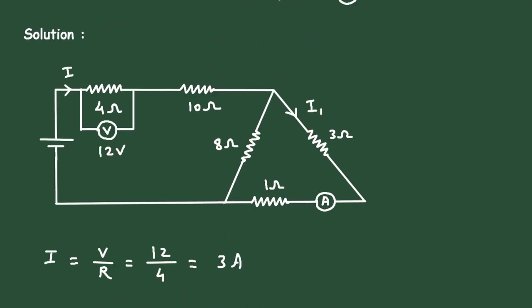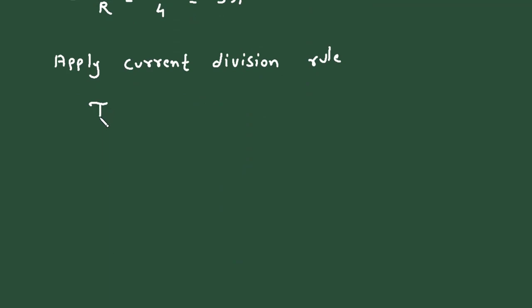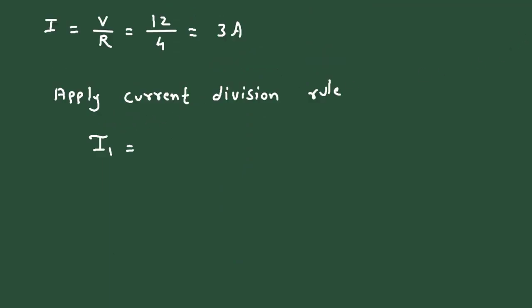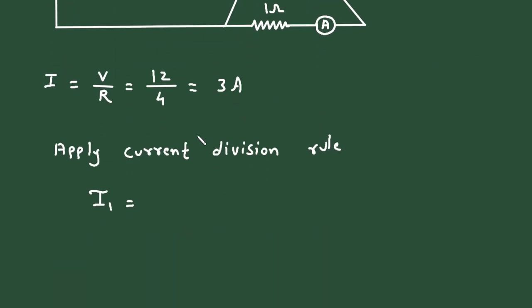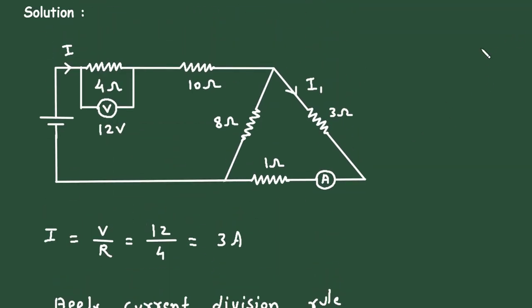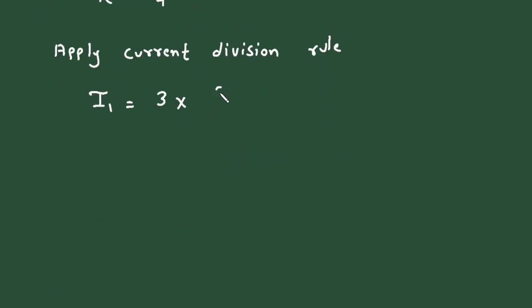So this will be I1 equals this current. Here we can see this current is I that is 3 ampere multiplied by opposite branch resistance. The opposite branch to this is 8 ohm. So it will be 8 ohm divided by same that is 8 ohm plus.